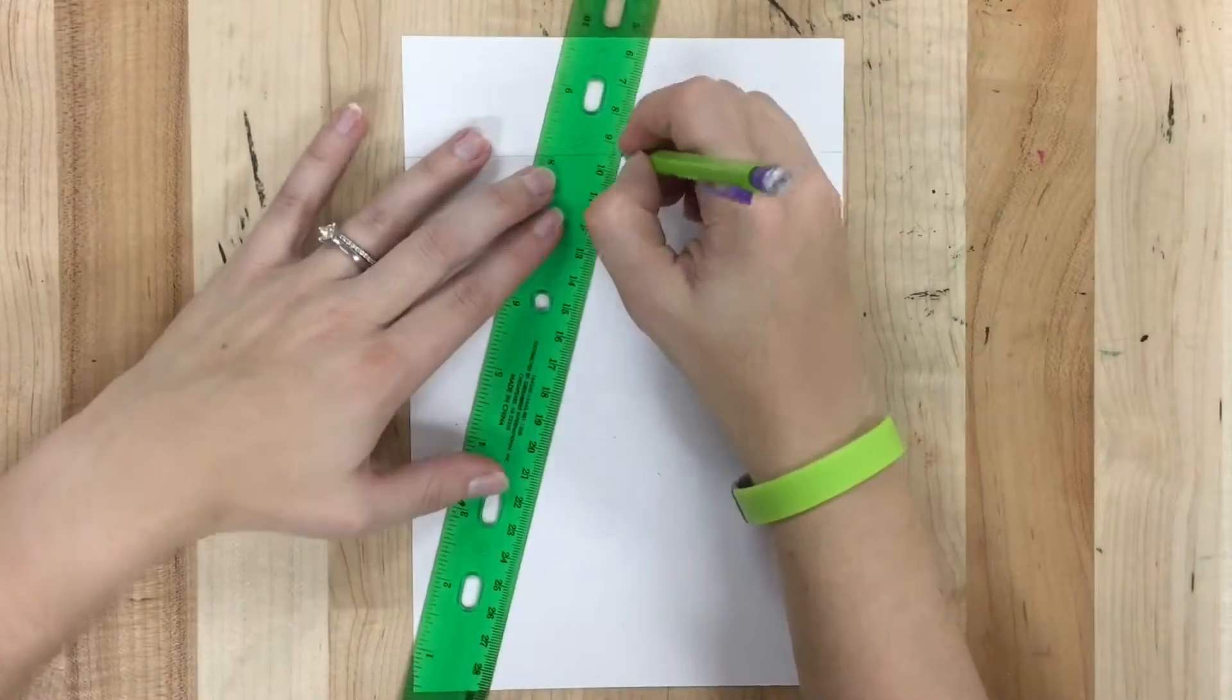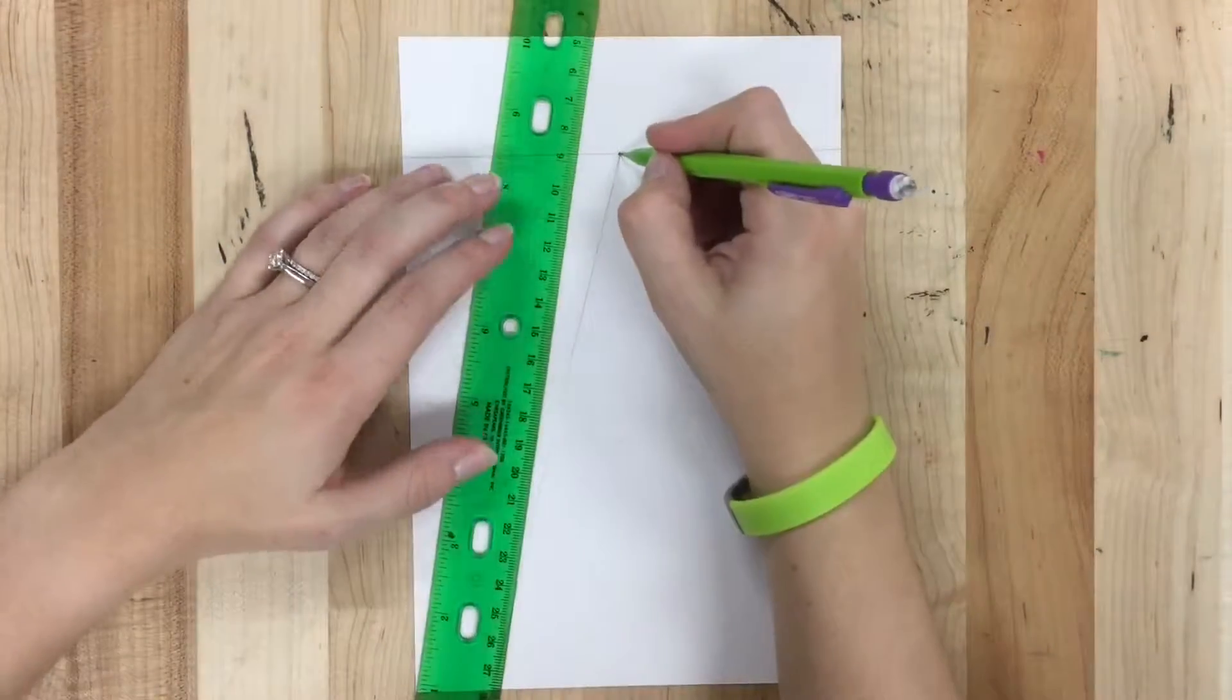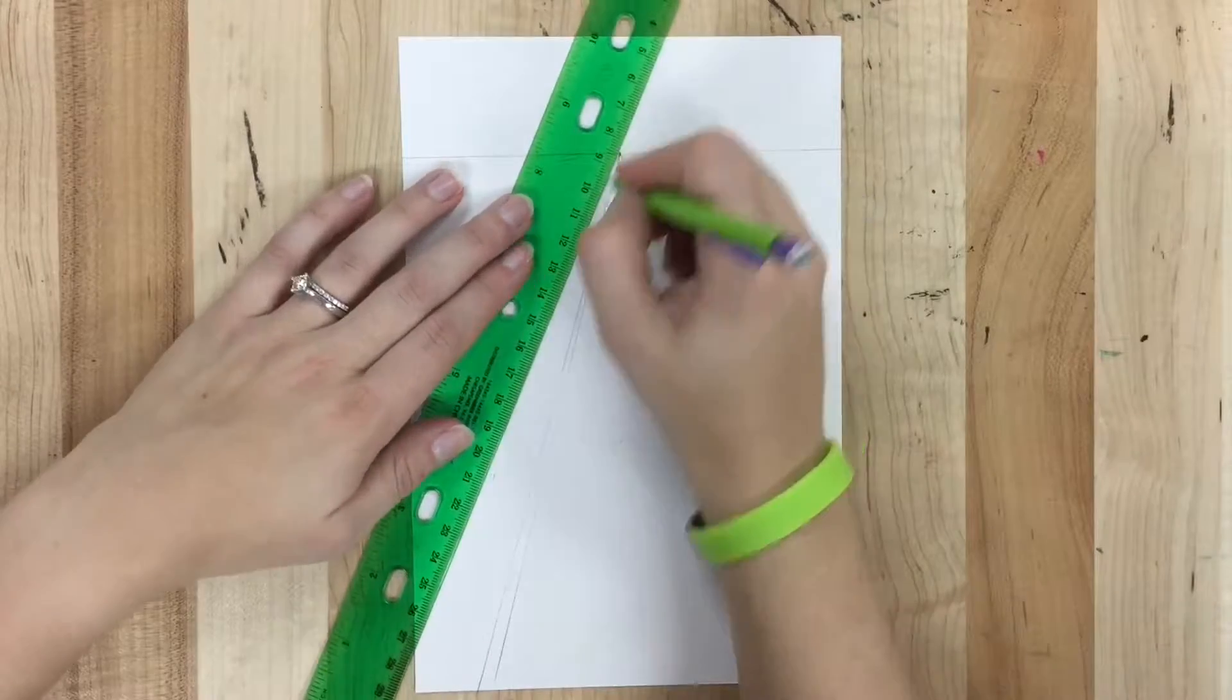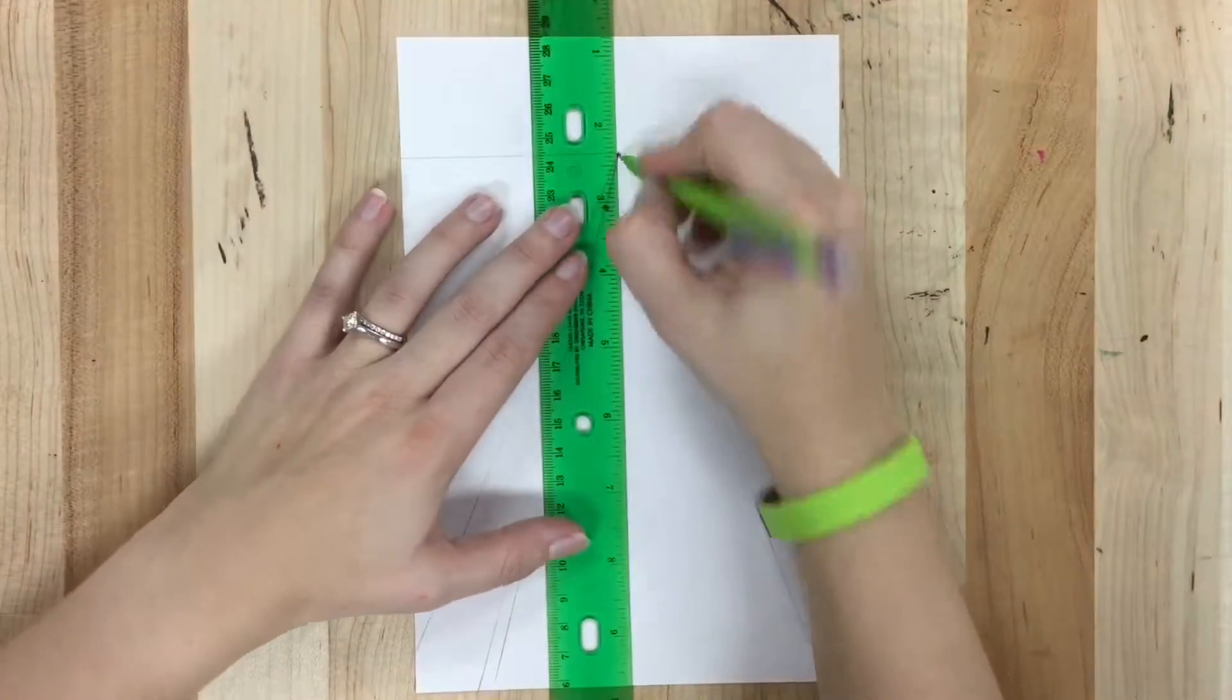So I'm going to start by drawing my road. And then I'm going to use my vanishing point to draw a thin line next to it. That's my curb. And then a little bit thicker line next to that, and that will be my sidewalk.